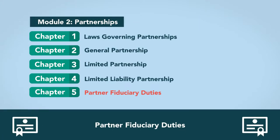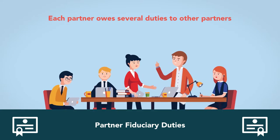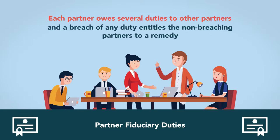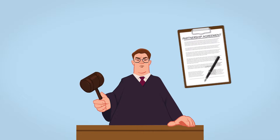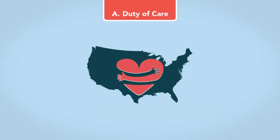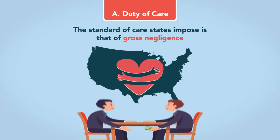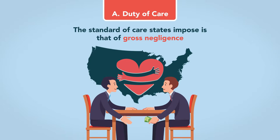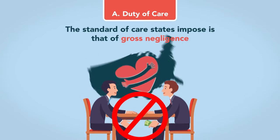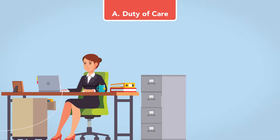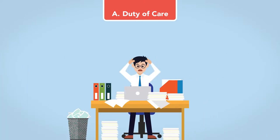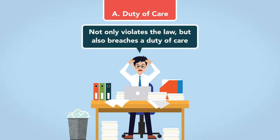Partner Fiduciary Duties. Regardless of the partnership's form, each partner owes several duties to other partners, and a breach of any duty entitles the non-breaching partners to a remedy. The court will scrutinize and strictly construe any partnership agreement that alters these fiduciary duties. The first is a duty of care. The standard of care states impose is that of gross negligence, where a partner must refrain from reckless conduct or intentional misconduct that hurts the partnership or the interests of the other partners. For example, a partner who handles human resources and disregards laws requiring retention of job applications and employment materials for at least one year not only violates the law but also breaches a duty of care.